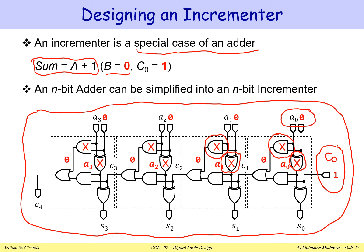Now how about input C0 which is equal to one? Look at this AND gate. This AND gate is ANDing A0 with one, and if you AND A0 with one the output is always A0. So we can remove this gate — we know the output is always A0, and we can simply connect a wire from input A0 to the output of the OR gate. There is no need for these gates.